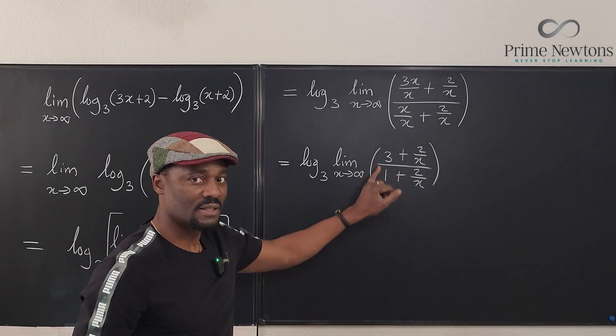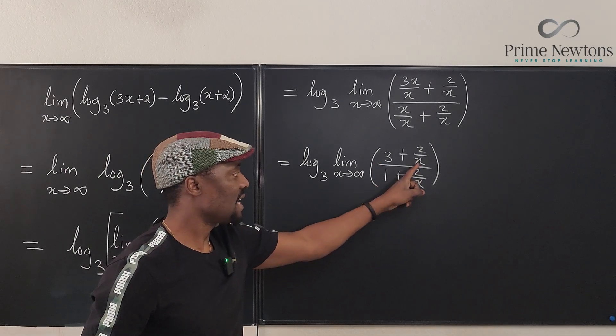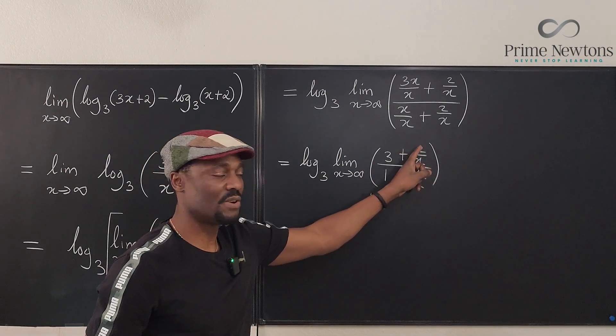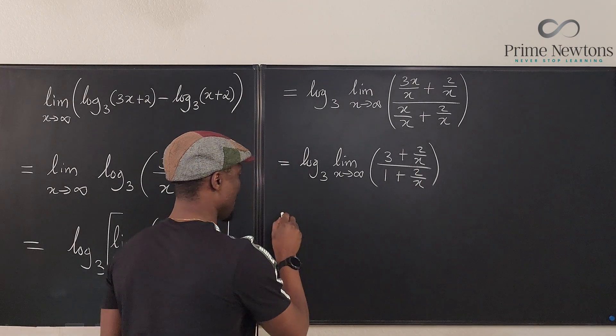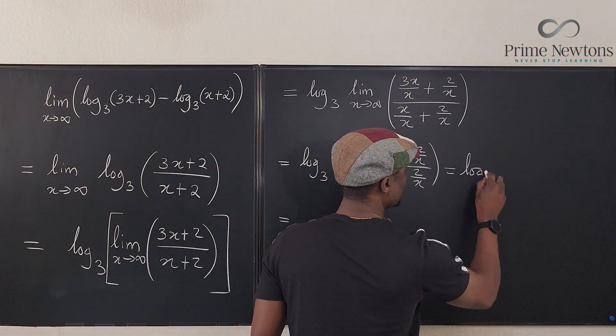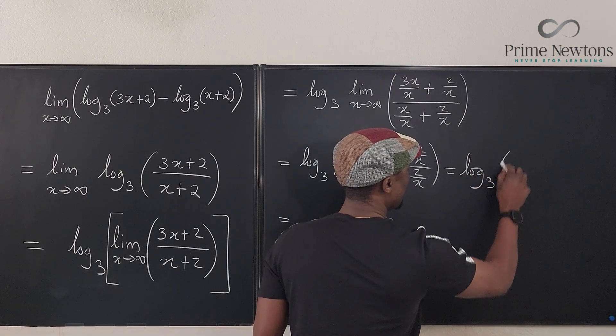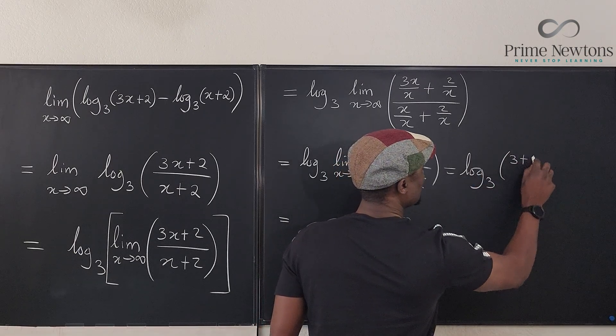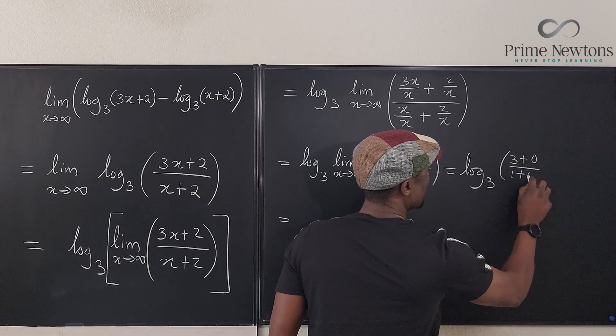This is constant. This is constant. No problem. As x goes to infinity, this goes to zero, this goes to zero. So your answer is actually, let me write it here. This is the logarithm to base three of three plus zero over one plus zero.